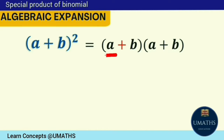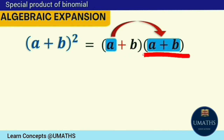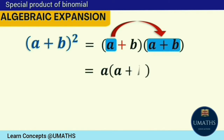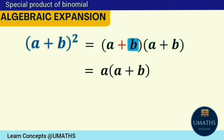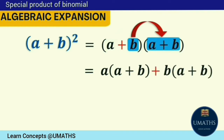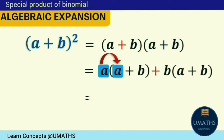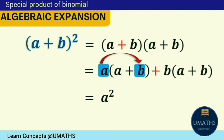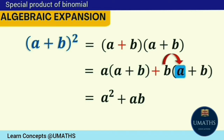The next step is to expand this product by the distributive law of multiplication — we multiply each term of the first expression to the second expression: a multiplied by a plus b, and b multiplied by a plus b. Expanding further: a times a gives a squared, and a times b gives ab.